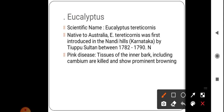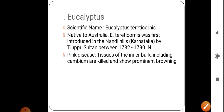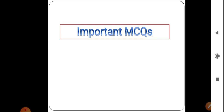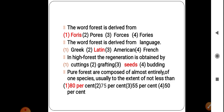Eucalyptus tereticornis is native to Australia and was first introduced in Nandi Hills by Tipu Sultan between 1782 and 1790. The major disease is pink disease, in which tissues of the inner bark including the cambium are killed and show prominent browning.